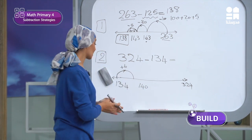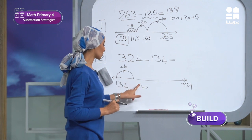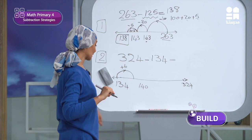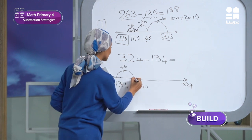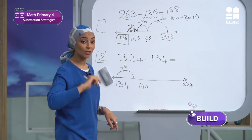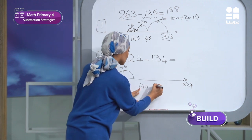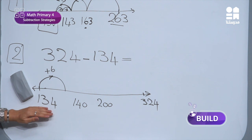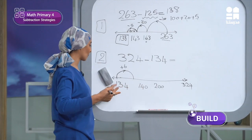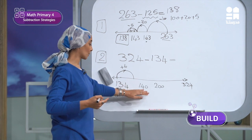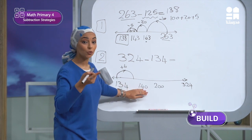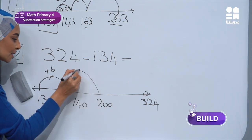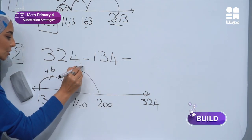This is the first benchmark. Then I will add 60 to reach the second benchmark, which is 200. So from 140, plus 60, I reach 200.